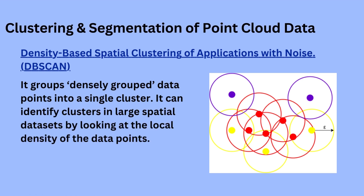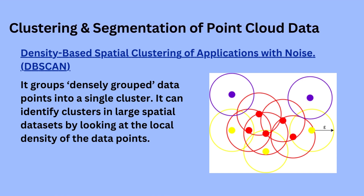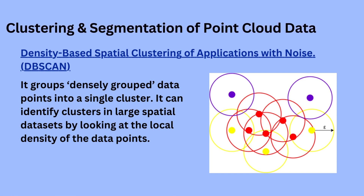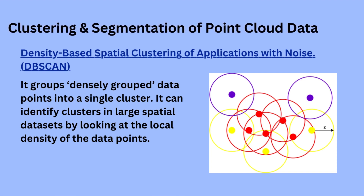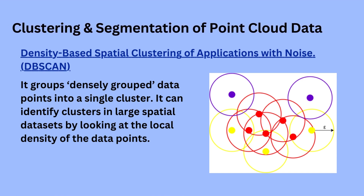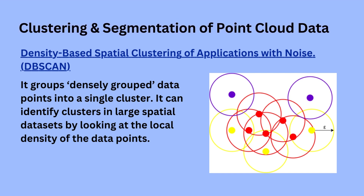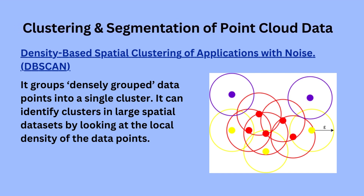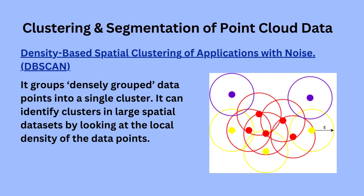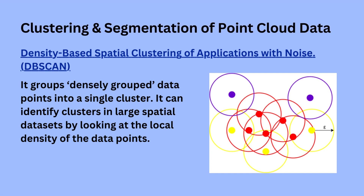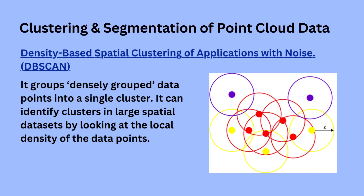Another popular segmentation clustering method is density-based spatial clustering of applications with noise, or DBSCAN. If you're interested to learn more, there's a great video and article linked in the description. This algorithm groups densely grouped points into clusters where it can identify clusters in large spatial datasets by looking at the local density of those data points. We have two variables used in DBSCAN: epsilon — the radius of the circle — and the minimum number of points to form a cluster. So let's use an epsilon value of 0.02 and a minimum number of points of 10.